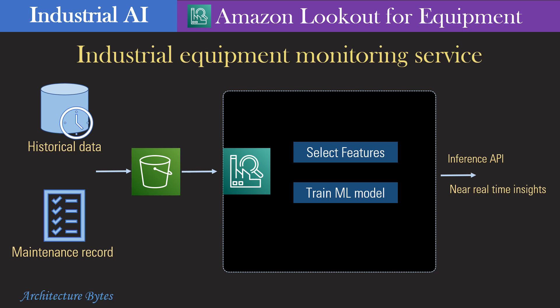Amazon Lookout for Equipment creates machine learning models for your equipment. Once the healthy or optimal state of your equipment has been learned, it can monitor sensor data in real time to identify anomalous behavior that could lead to machine failure, thus generating notifications and initiating actions.